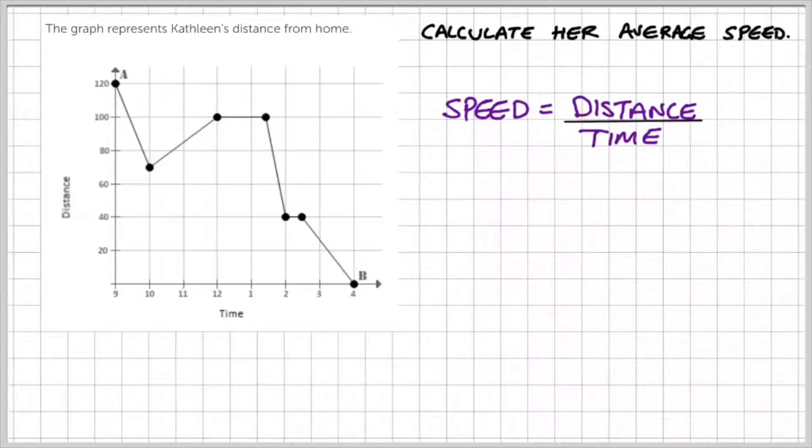So we need to work out the total distance travelled in this graph and then divide it by the total time that we have. However, be careful when reading distance-time graphs because you'll see in this example, Kathleen is travelling home, then she travels away from home, and then she's resting and then she's travelling to home again.